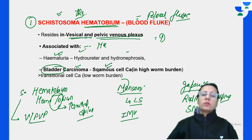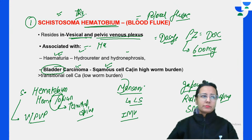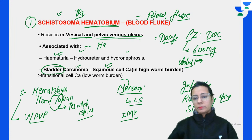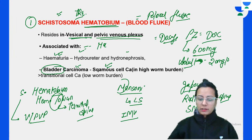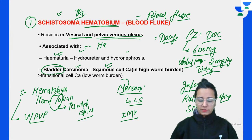Regarding praziquantel dosage: praziquantel is the drug of choice for most trematodes, but one exception is Fasciola hepatica - for that, triclabendazole is the drug of choice. If given in children it is around 600 mg. In adults it is given per kg body weight - around 15 to 20 mg per kg body weight given around 3 times per day according to body weight. Please reconfirm from pharmacology.